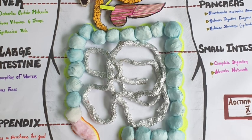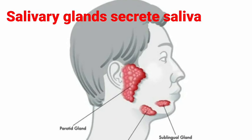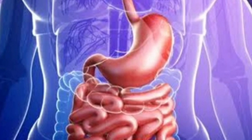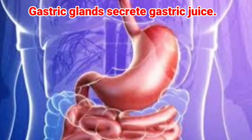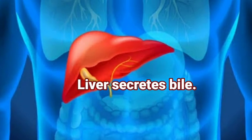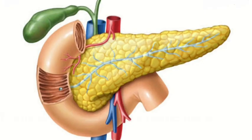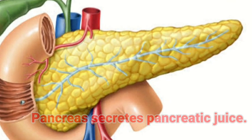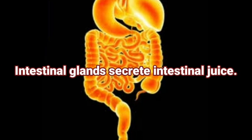Associated glands include the salivary gland, which secretes salivary juice; gastric glands, which secrete gastric juice; liver, which secretes bile; pancreas, which secretes pancreatic juice; and intestinal glands, which secrete intestinal juice.